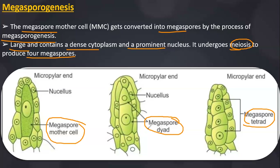In case of microsporogenesis, all 4 cells develop into haploid pollen grains. But there is a difference in megasporogenesis: three cells towards the micropylar end degenerate, and only one cell in the chalazal end becomes functional.